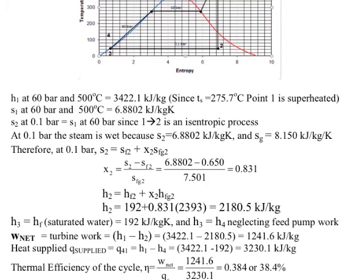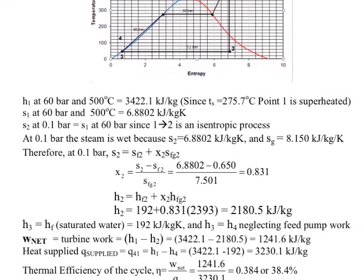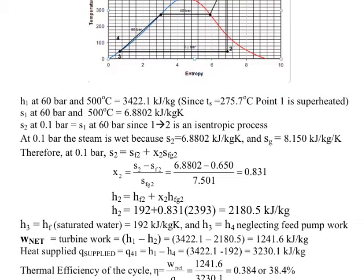Again, as in example 1, we use the enthalpy value from 0.1 bar with our new dryness fraction. The enthalpy h_f at 0.1 bar is 192 kJ per kilogram.